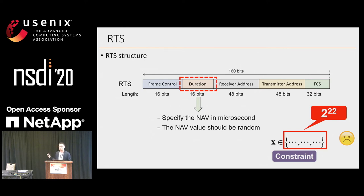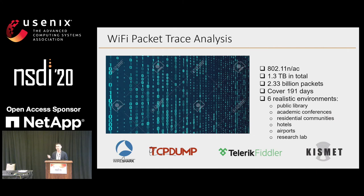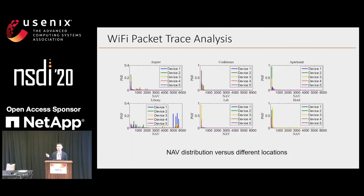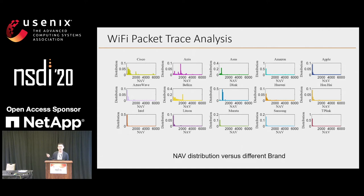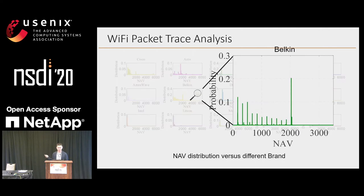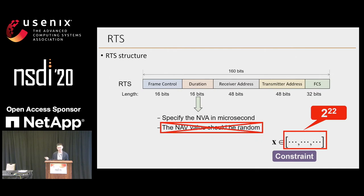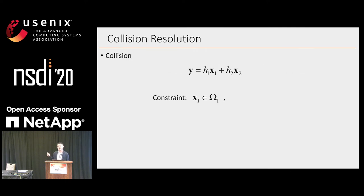But this size is too big, so we are going to challenge whether the NAV value is indeed random. In order to verify, we collect our own dataset with 1.3 GB from 6 realistic environments. Here is the distribution at different locations — we can see these are not random. This is the NAV distribution for different Wi-Fi AP brands, and for example the Belkin, we can see the values only focus on several points. So we know this assumption of randomness is not true.